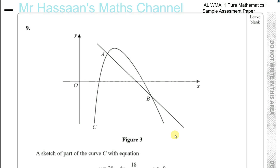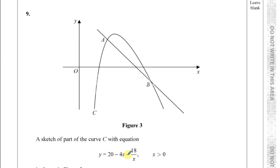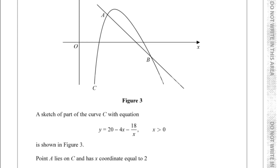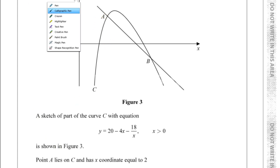We have question number 9 from the International A-Level P1 sample assessment paper made by the examining board at Edexcel. The question is about a curve with equation y equals 20 minus 4x minus 18 over x, where x is greater than 0. There's a point A that lies on the curve C, and the x-coordinate of point A is 2.